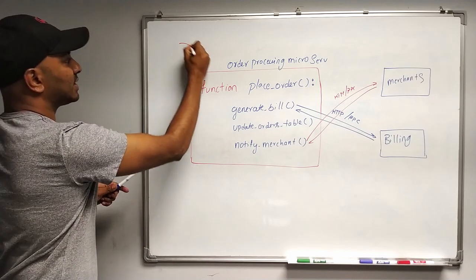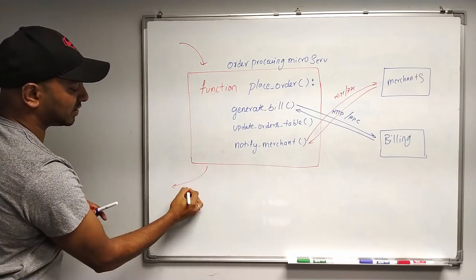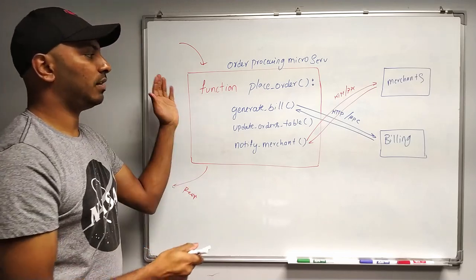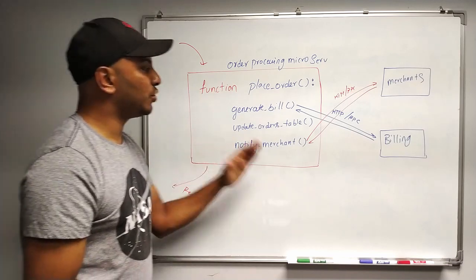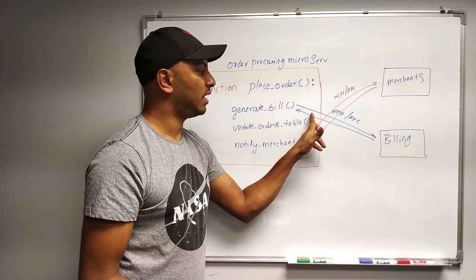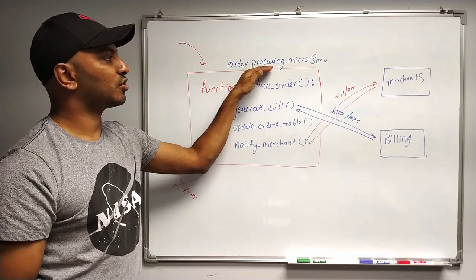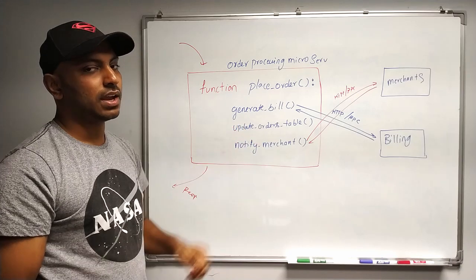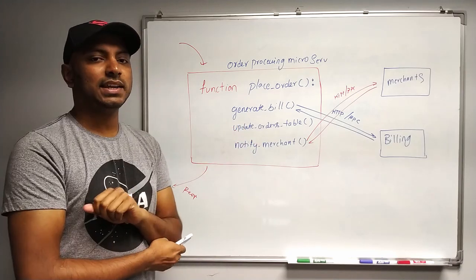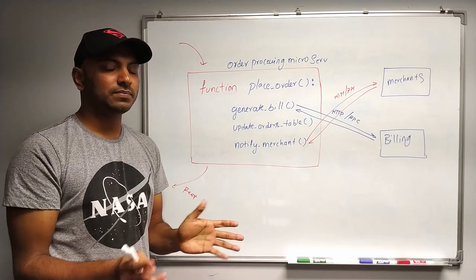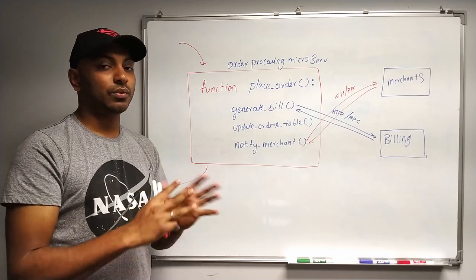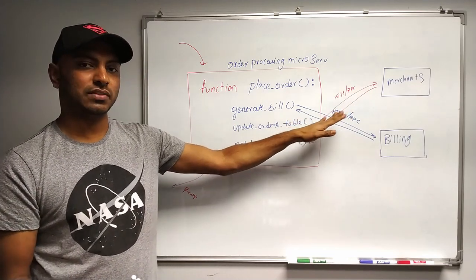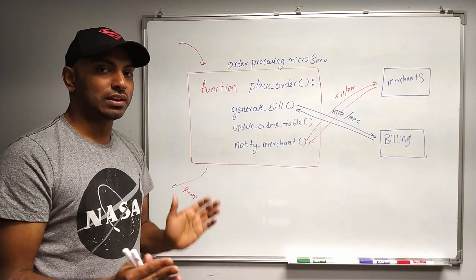We get back the response and can now return the response — the request started here, and the response comes after finishing all of this work. There are advantages and disadvantages to doing it this way. What we are doing is making synchronous calls from the order processing microservice to the billing and merchant microservices. This is not really the ideal way to do things all the time.